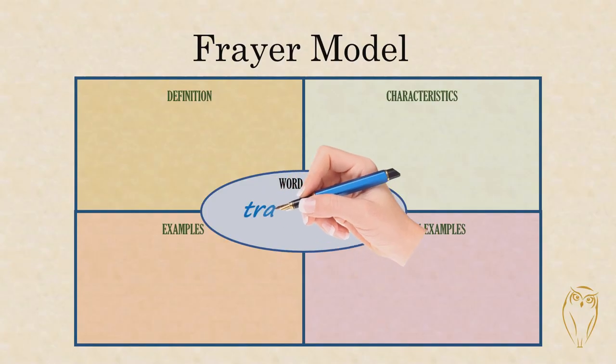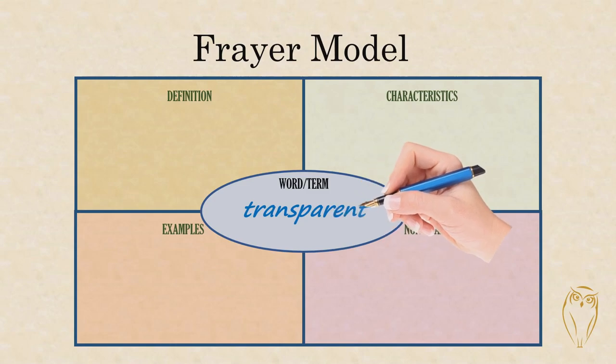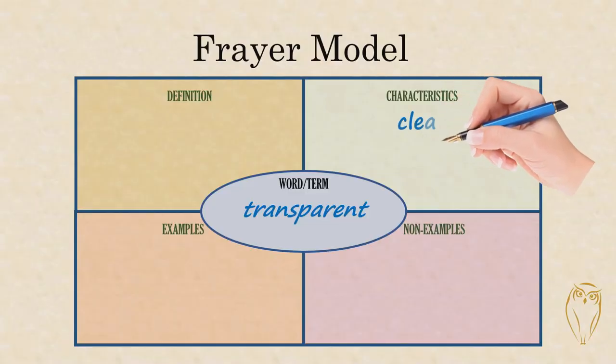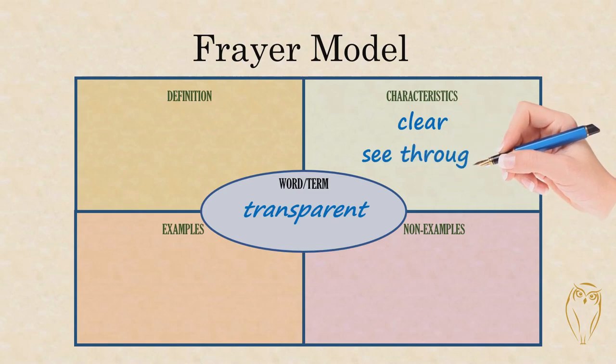So I'm going to model that strategy for you with one of our actual vocabulary words, and the word I'm going to use is 'transparent.' The first thing I'm going to do is write 'transparent' in the oval at the center of my model, and then I'm going to look to the top right block and think to myself: what do I think the word 'transparent' means? What comes to mind when I hear that word? I tend to think about things that are clear or that I can see through, so I'm going to write down those characteristics or attributes in that top right block.